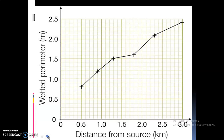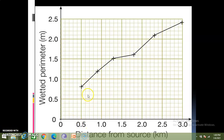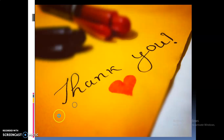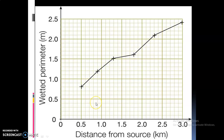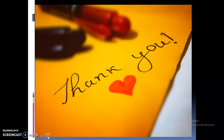I will share the image of a graph here. In this graph, the distance from source is plotted along the x-axis and the width of the perimeter is plotted along the y-axis. This is how graphs are used to convey information. Meet you in the next class. Thank you.